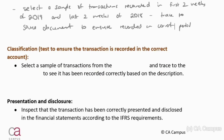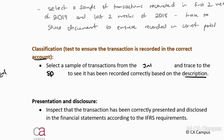Classification is straightforward: we need to test that the transaction is recorded in the correct account. Select a sample from the journal and trace it to the source document to confirm it's been recorded correctly based on the description. The biggest risk here is that expenses are recorded as assets — for example, repairs and maintenance get capitalised to a specific asset — so you want the description on the source document to confirm whether it is an asset or an expense.